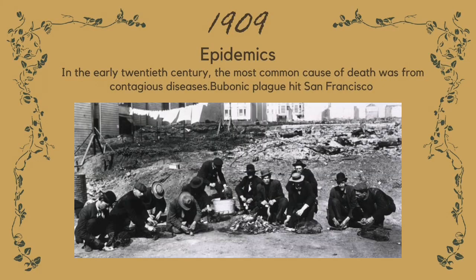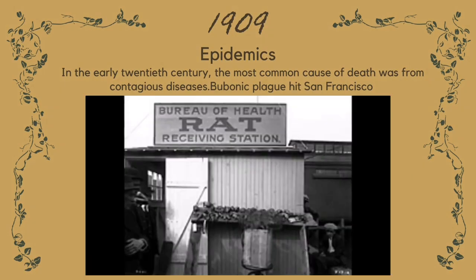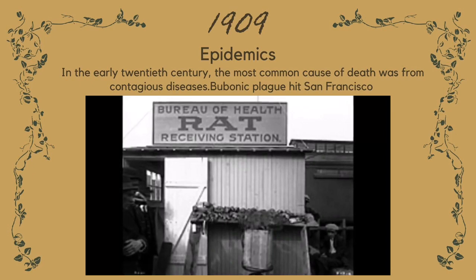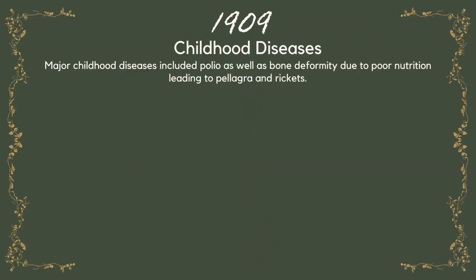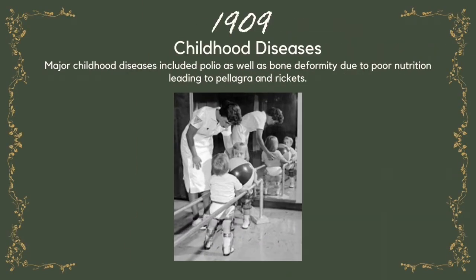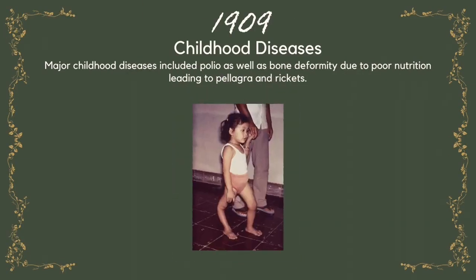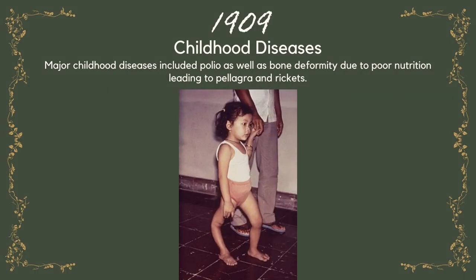1909 — Epidemics. In the early 20th century, the most common cause of death was from contagious diseases; bubonic plague hit San Francisco. 1909 — Childhood Diseases. Major childhood diseases included polio as well as bone deformity due to poor nutrition, leading to pellagra and rickets.